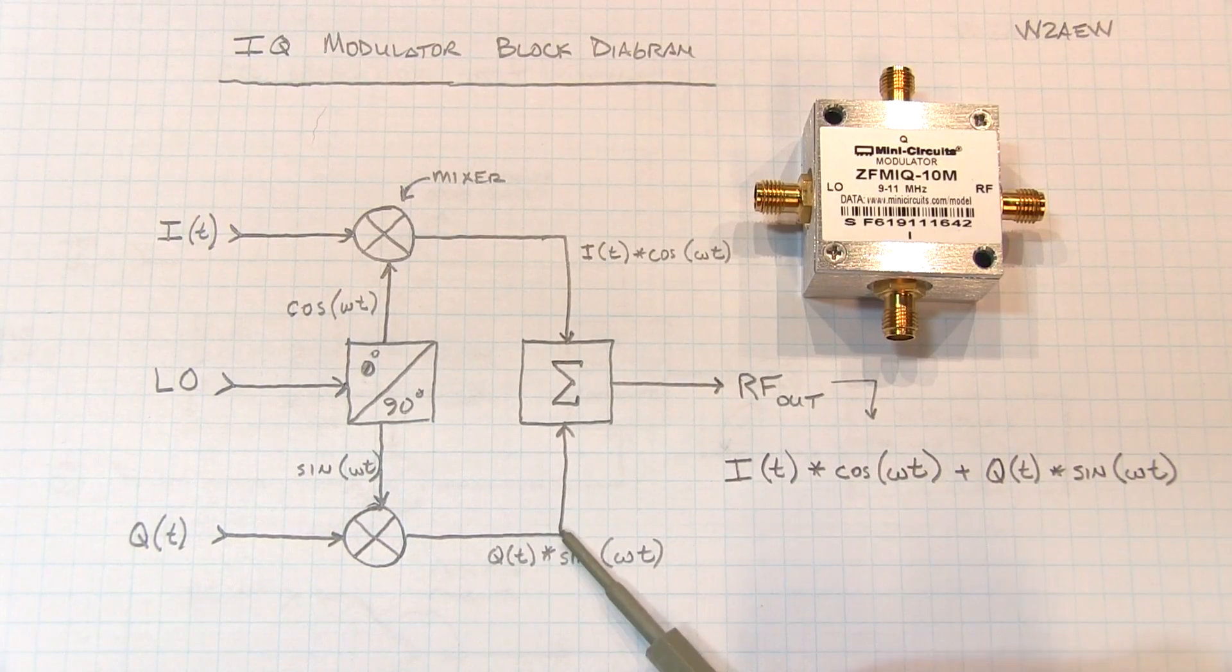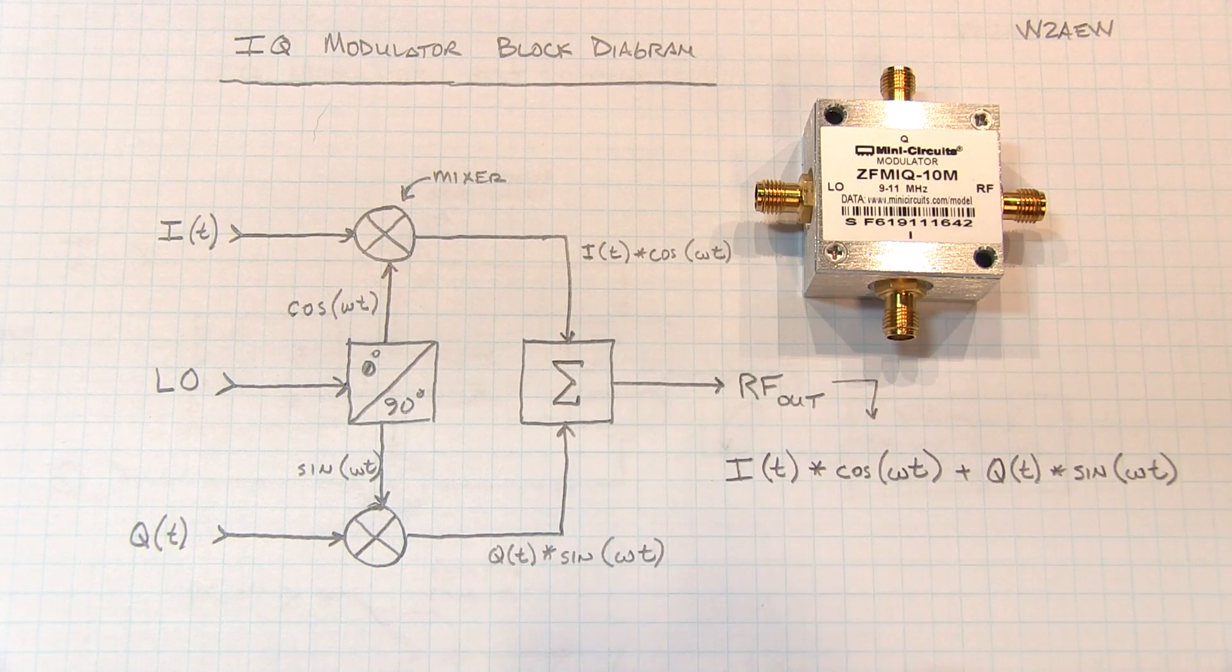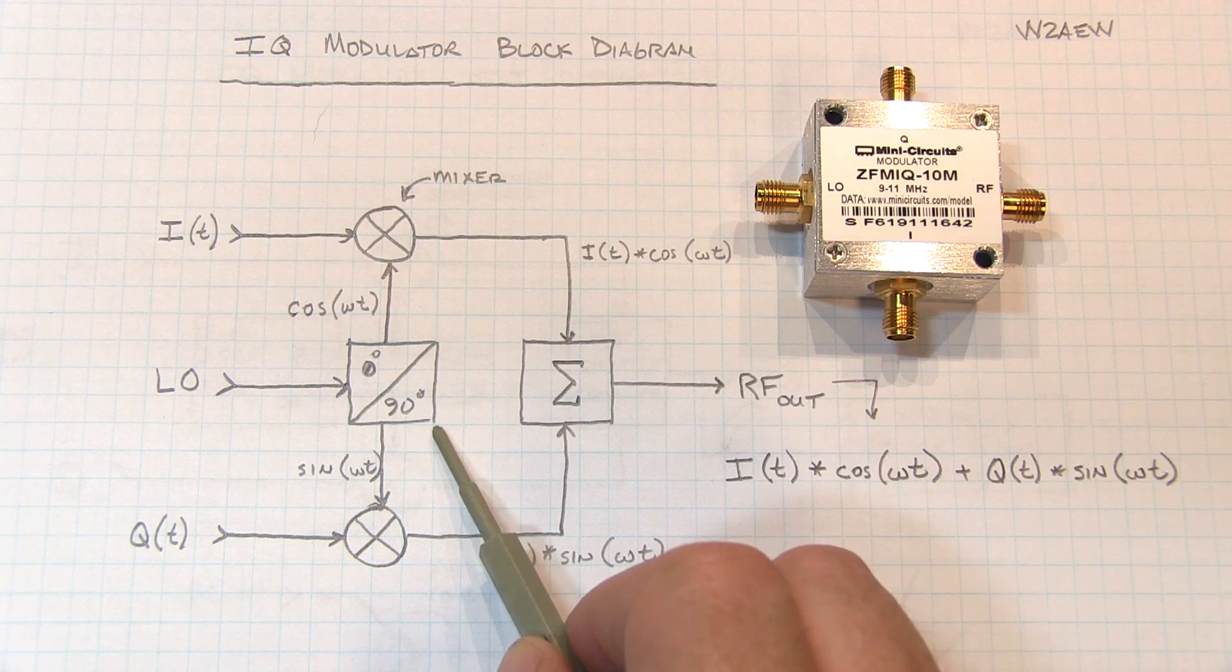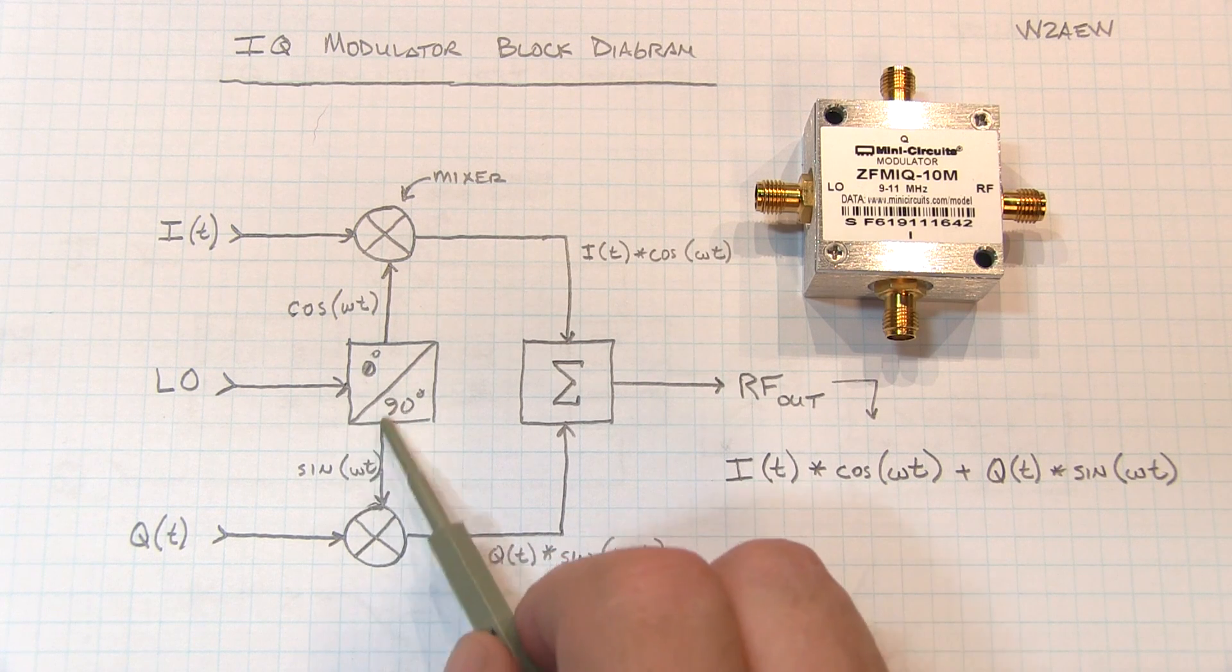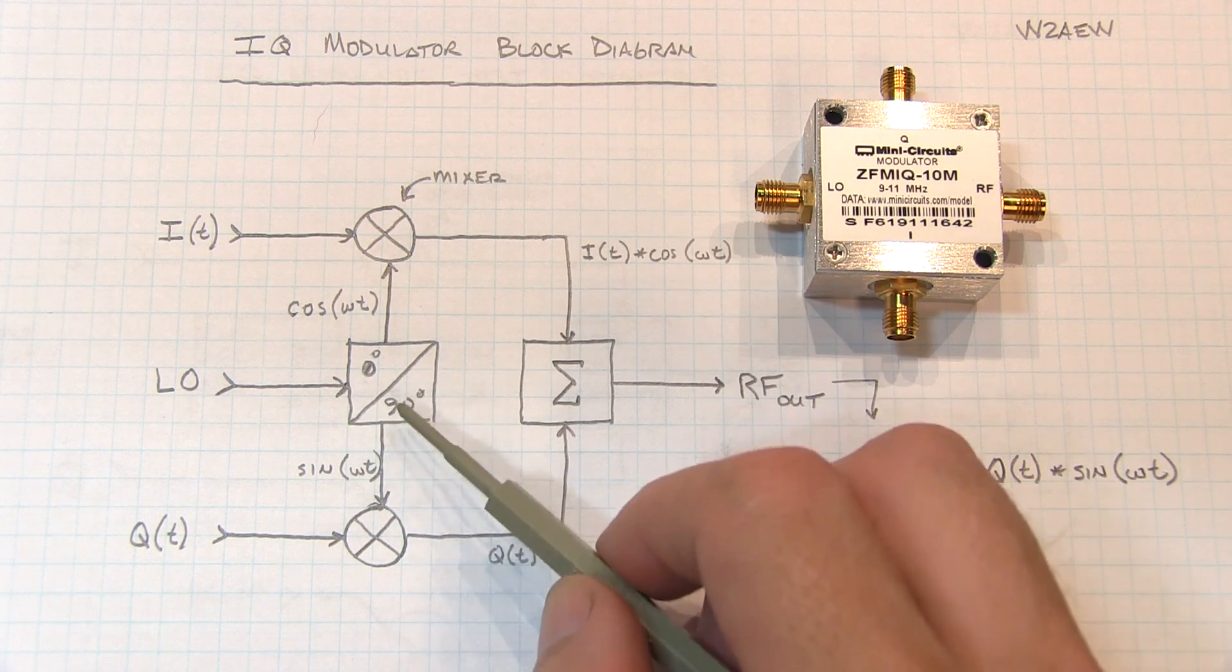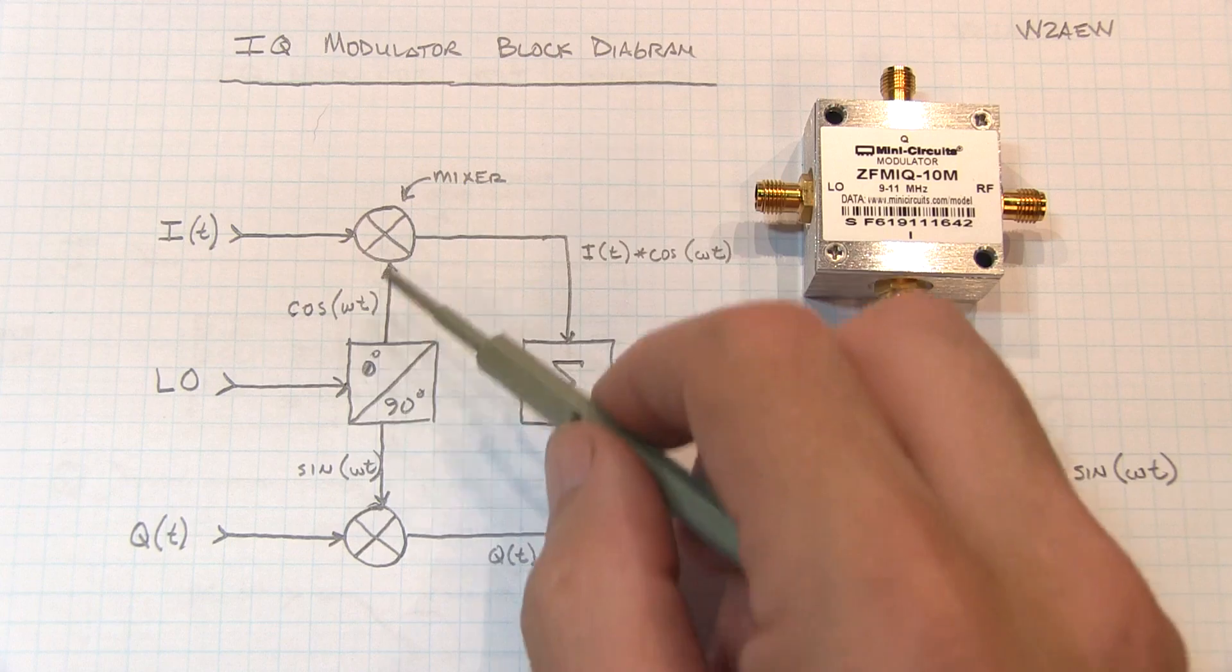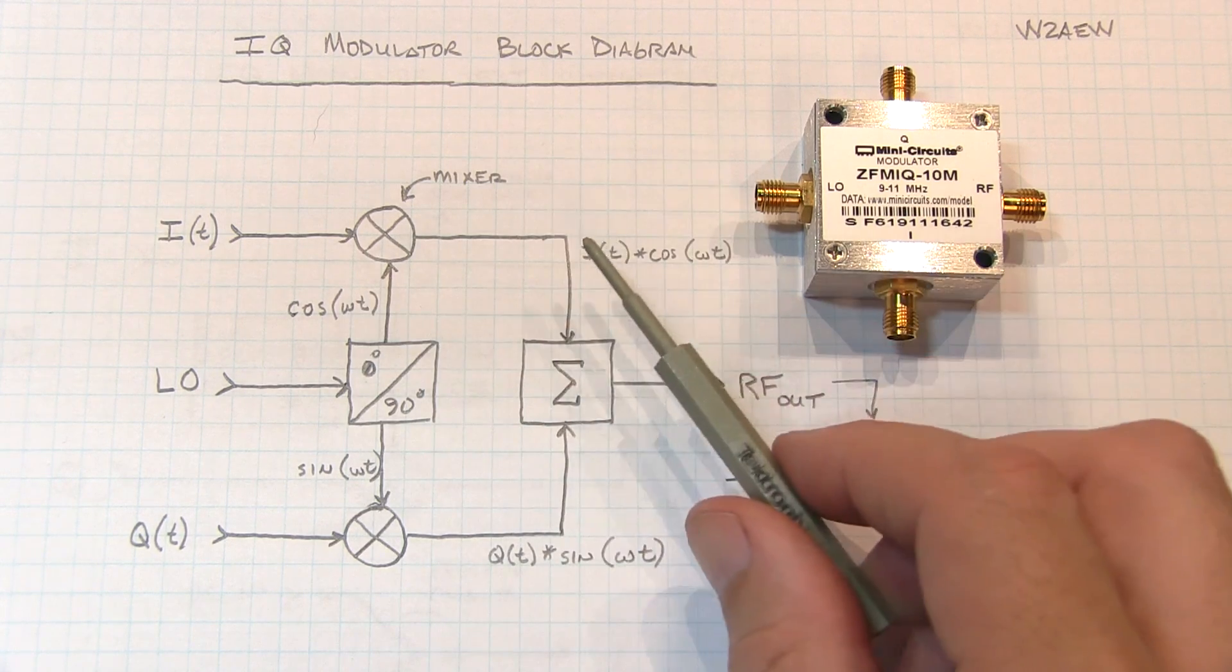Now here's a block diagram of a typical quadrature modulator like this one from Mini Circuits. The local oscillator signal comes in and goes into something like maybe a quadrature hybrid, or maybe even a splitter and a delay line, or a 90-degree phase shifter, to create the in-phase and quadrature LOs that are applied to the mixers.